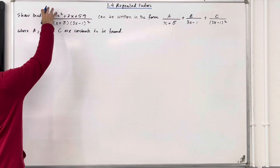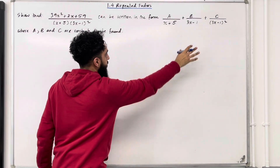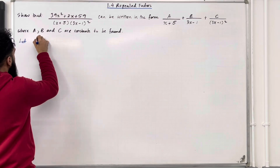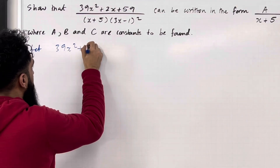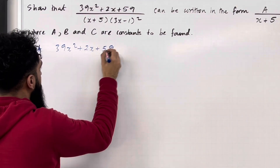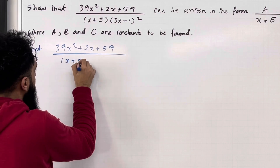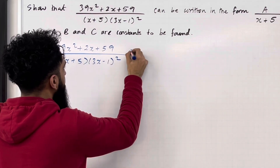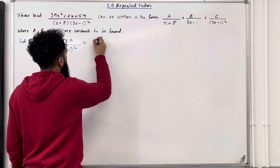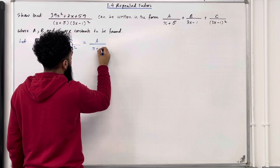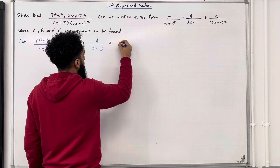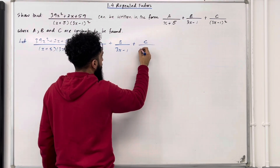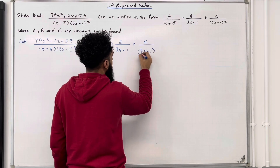We want to express this fraction as partial fractions. The first step is to let the given fraction (39x² + 2x + 59) / [(x + 5)(3x − 1)²] equal the given partial fractions: A/(x + 5) + B/(3x − 1) + C/(3x − 1)².